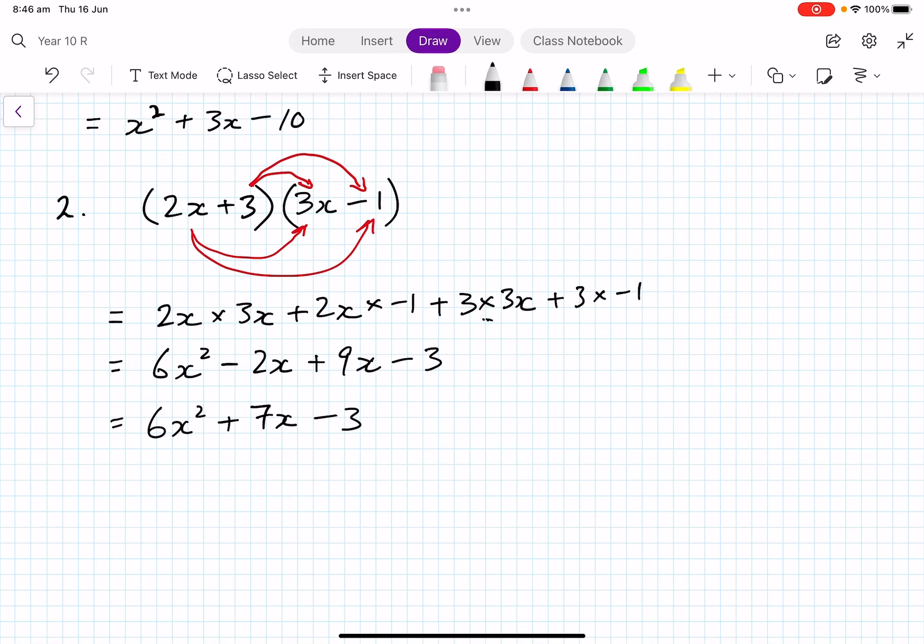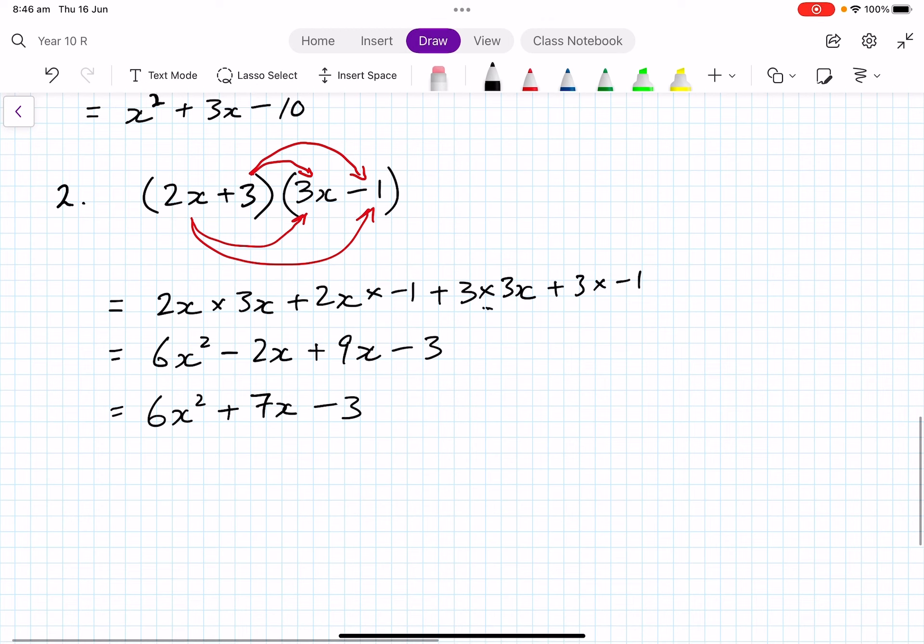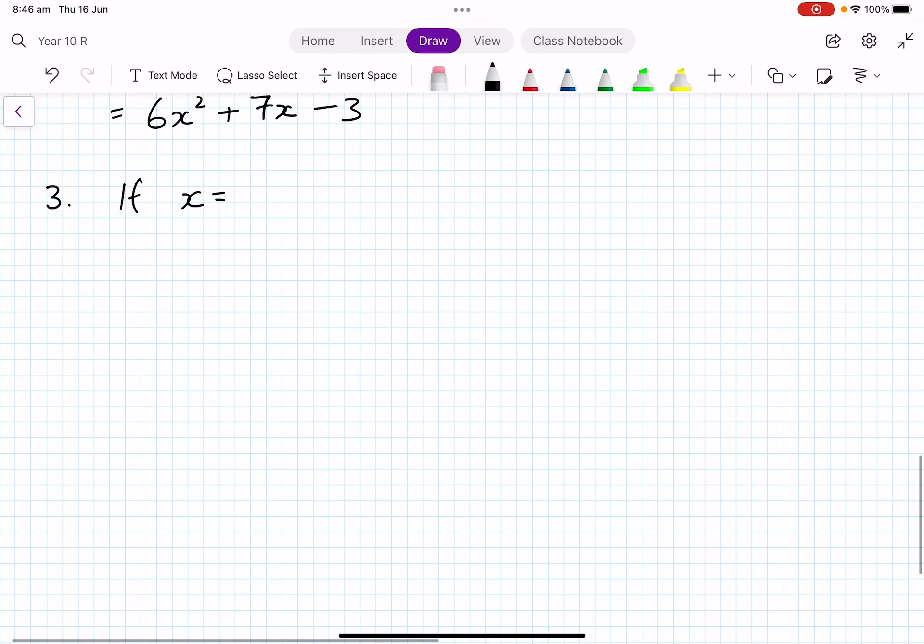Now, there's two more things that we need to do. The first one is to be able to substitute values in and work out what value expressions have. So, let's have a look. If x is equal to minus 4, find the value of x plus 3, bracket x minus 5. That's the first one.